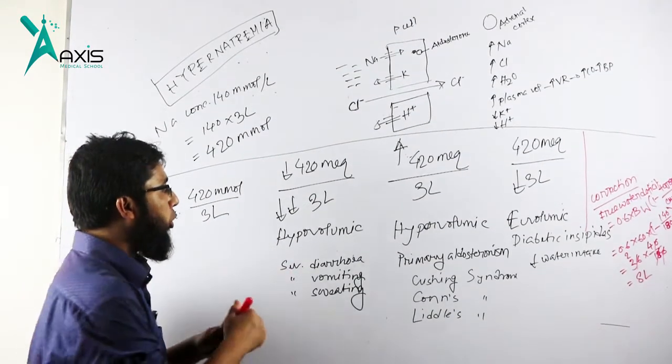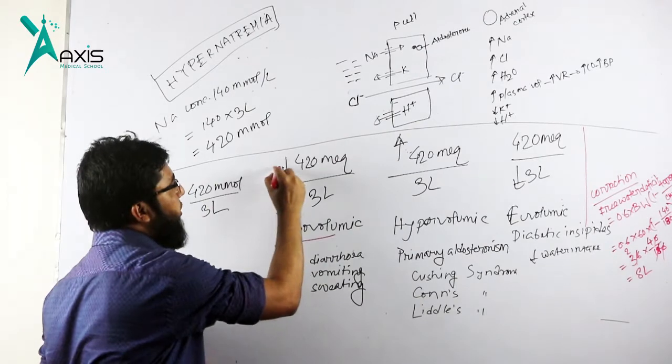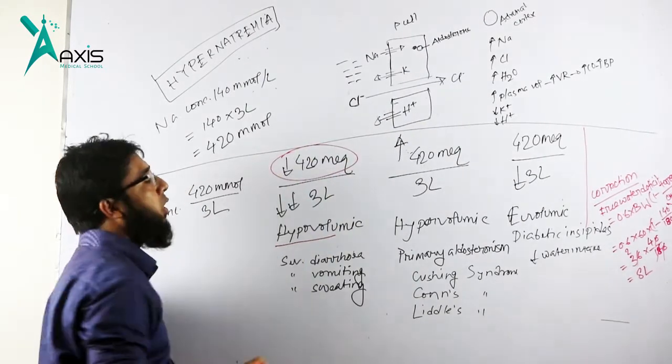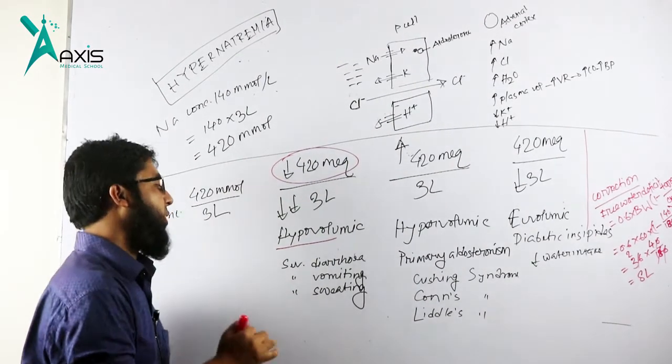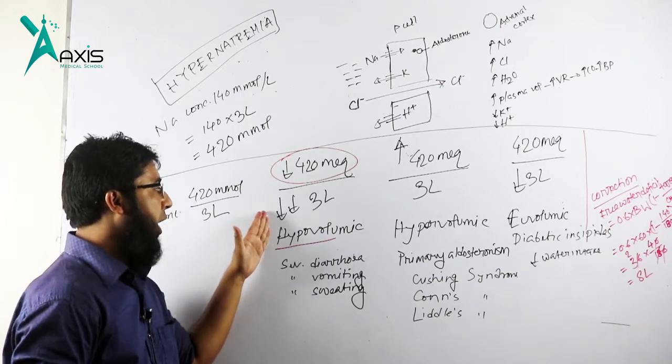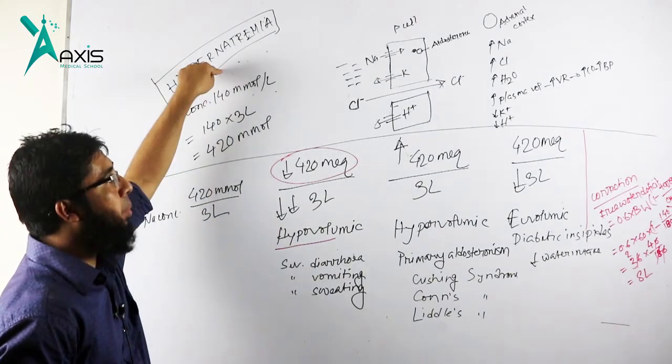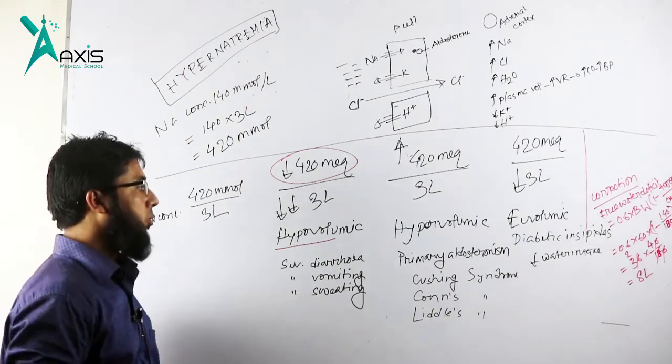Hypovolume means the volume of sodium. The sodium volume is decreasing. This is what we call hypovolemic hypernatremia.